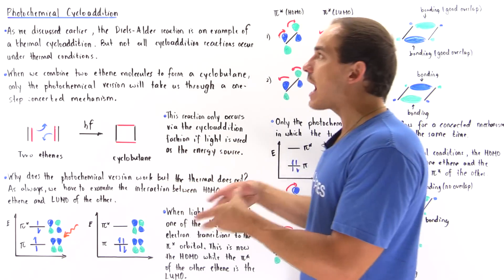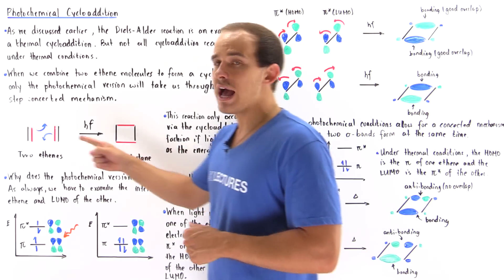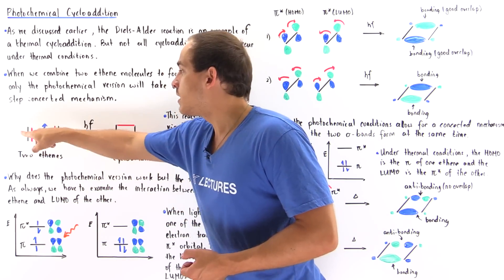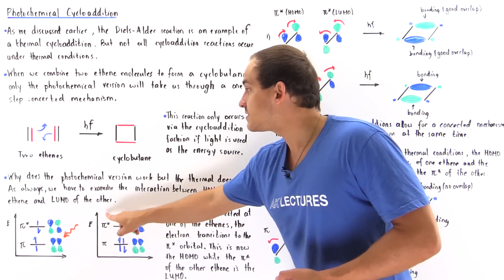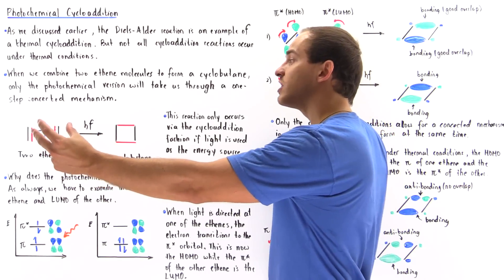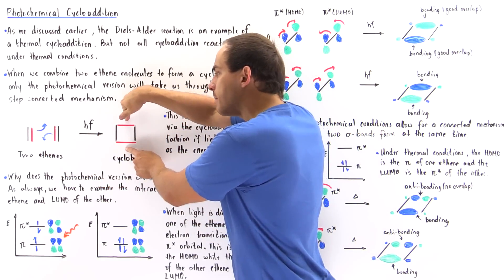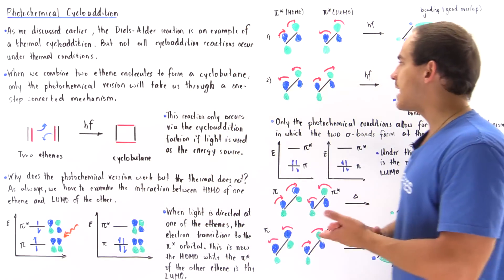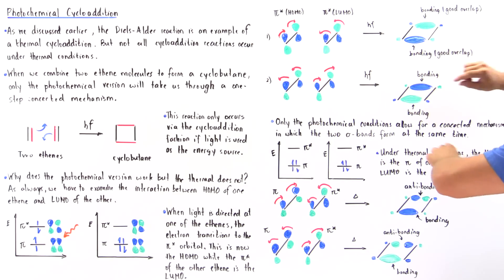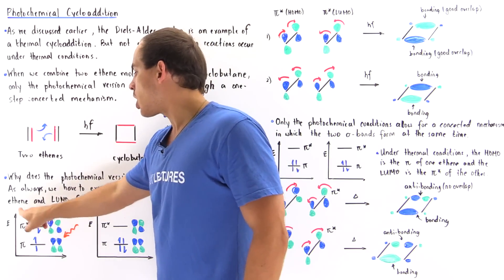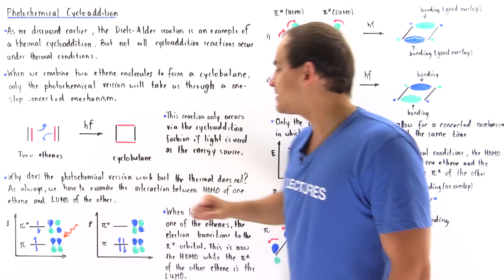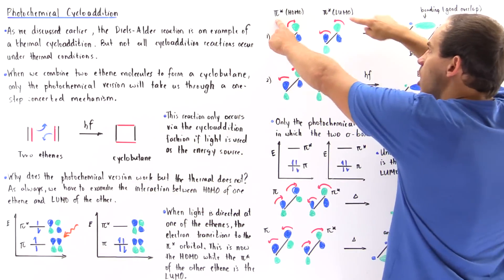In the photochemical cycloaddition of two ethenes, we combine the highest occupied molecular orbital of the first ethene — pi star — with the pi star of the second ethene molecule. The overlap of these orbitals to form our two sigma bonds has to take place in a single step. We take pi star as the HOMO of the first ethene and pi star as the LUMO of the second ethene.